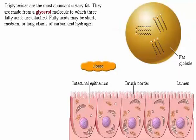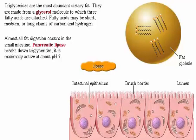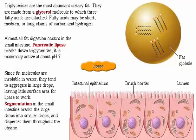Triglycerides are the most abundant dietary fat. They are made from a glycerol molecule to which three fatty acids are attached. Fatty acids may be short, medium, or long chains of carbon and hydrogen. Almost all fat digestion occurs in the small intestine. Pancreatic lipase breaks down triglycerides and is maximally active at about pH 7. Since fat is insoluble in water, it tends to aggregate in large drops, leaving little surface area for lipase to work. Segmentation in the small intestine breaks the large drops into smaller drops and disperses them throughout the chyme.